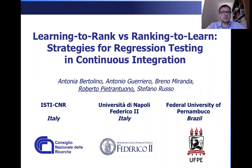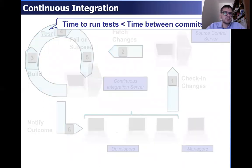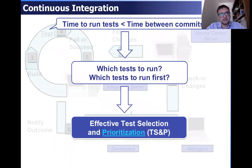In this work, we have explored learning-based strategies for regression testing in continuous integration settings. In continuous integration, developers frequently commit changes. These changes are then integrated into the code base by continuous build and test cycles. A problem they often face is that the time to run regression tests is often less than the time available between two consecutive commits, so they need to decide which tests to run and or which tests to run first. This is the test selection and test prioritization problem.